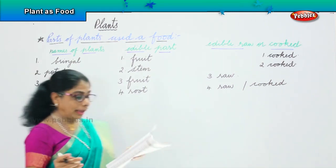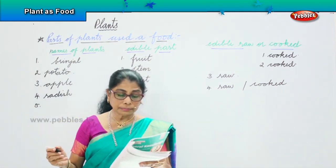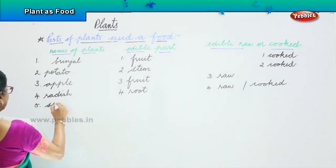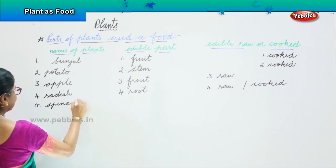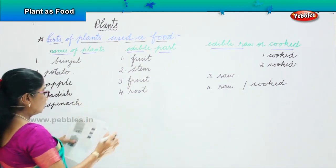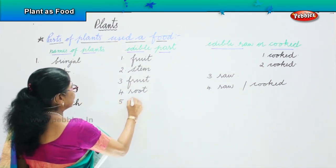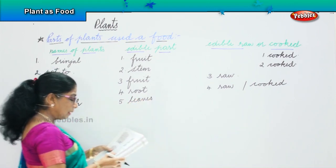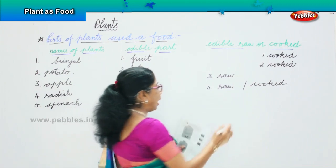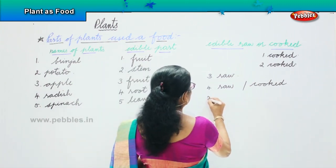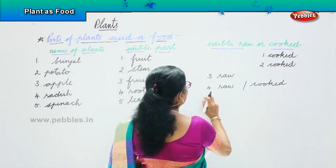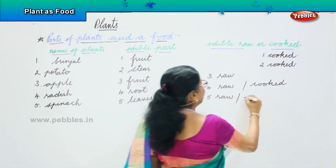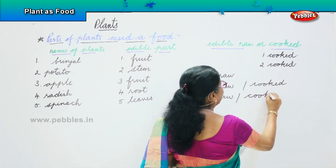Next we are going to look at spinach. What is spinach? Spinach are leaves. And how do you eat it? Spinach can be eaten raw and it can also be cooked. Depends on the kind.